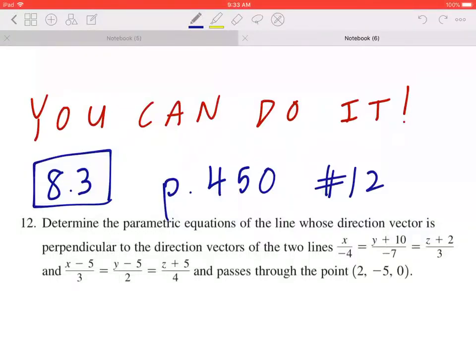Hi everyone, let's take a look at number 12 on page 450. Determine the parametric equations of the line whose direction vector is perpendicular to direction vectors of the two lines x divided by negative 4, equal to y plus 10 divided by negative 7, equal to z plus 2 divided by 3.